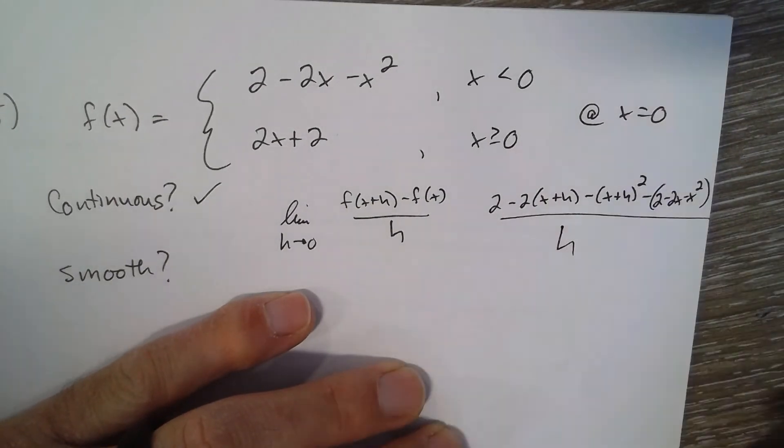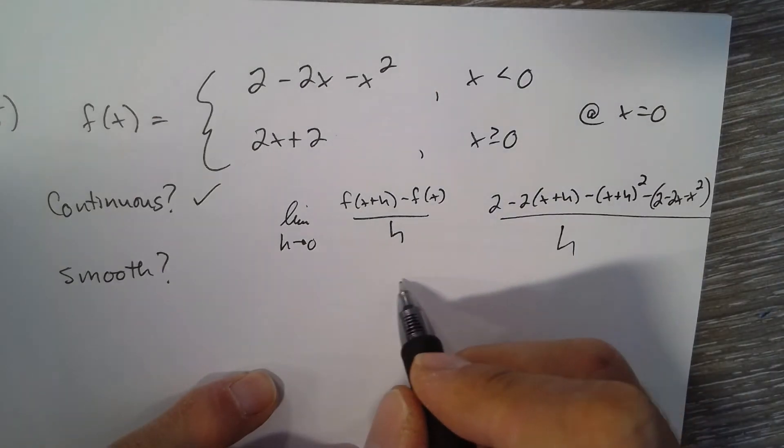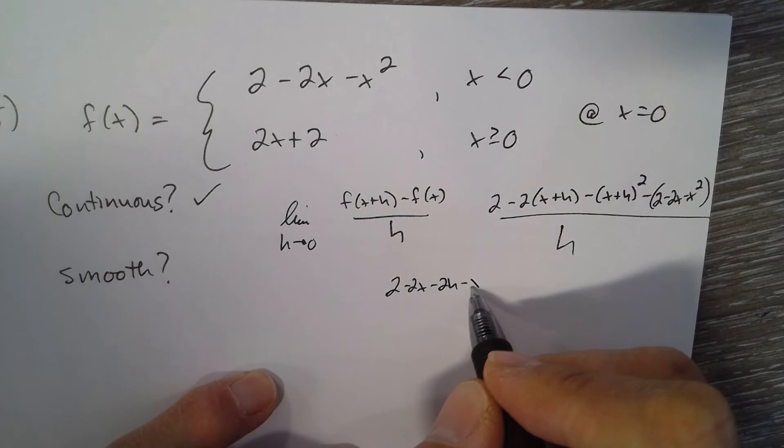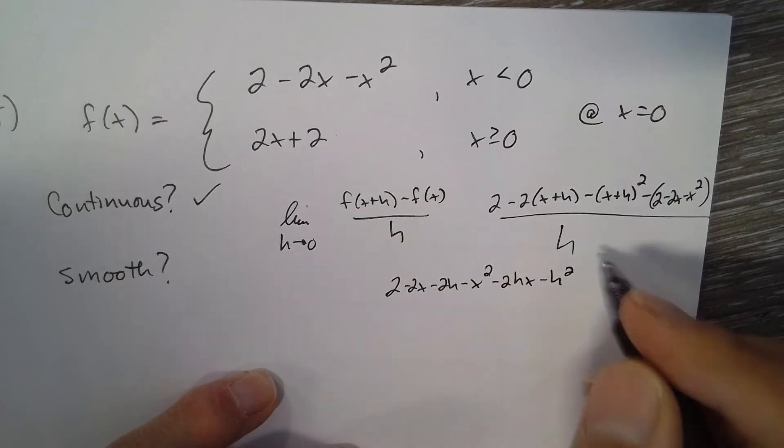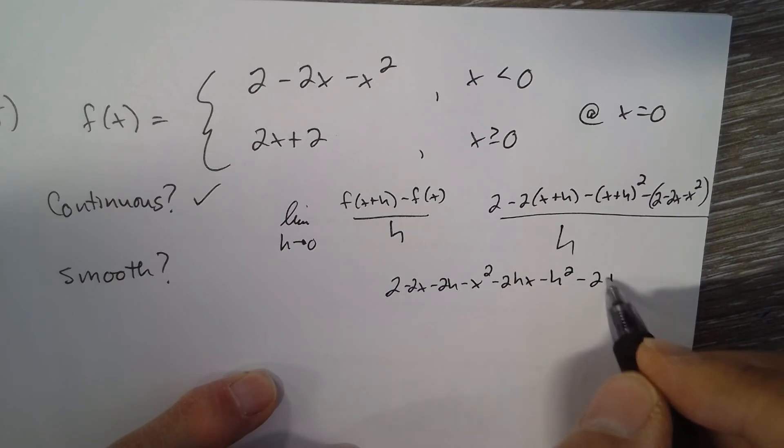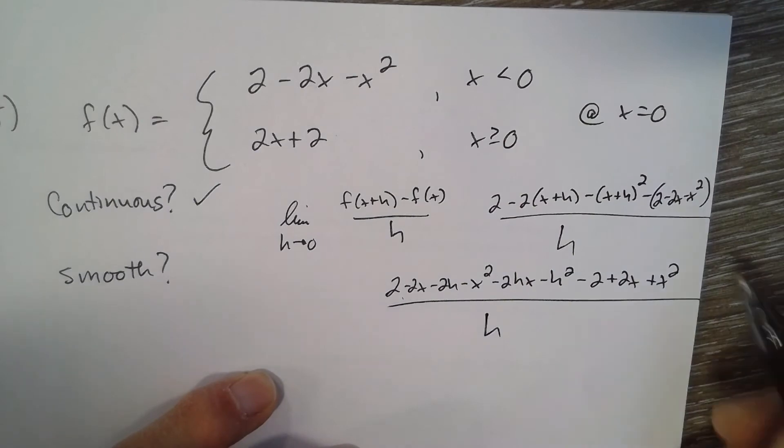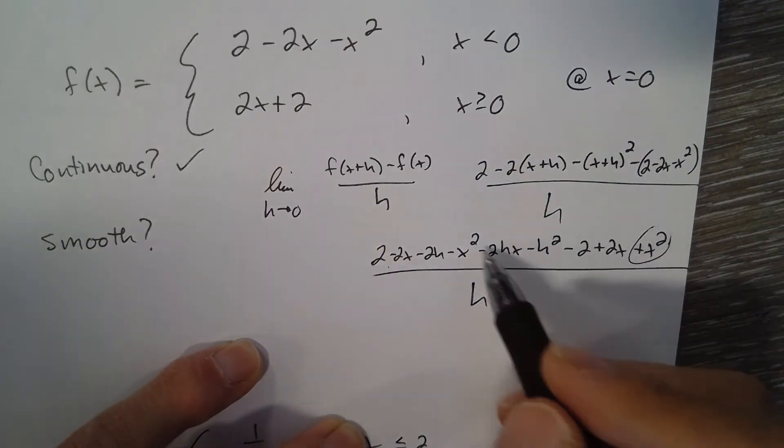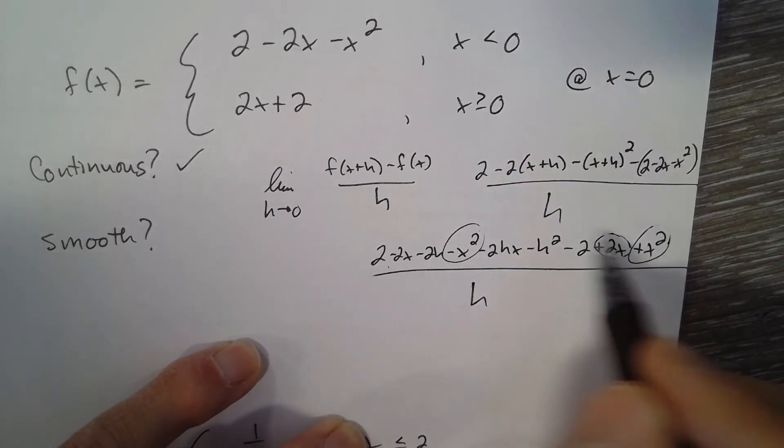All over h as h goes to zero. Let me clean all that up. I have 2 minus 2x minus 2h minus x squared minus 2hx minus h squared minus 2 plus 2x plus x squared. We've got an x squared and negative x squared, a 2x and minus 2x, 2 and minus 2.